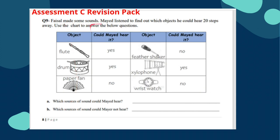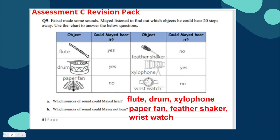Question nine: Faisal made some sounds and Mayed listened to find out which objects he could hear 20 steps away. The objects are flute, drum, paper fan, feather shaker, xylophone, and wristwatch. Mayed could hear the flute, drum, and xylophone. He could not hear the paper fan, feather shaker, or wristwatch — because these make soft sounds.